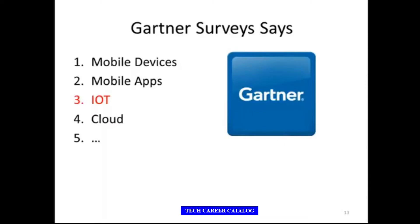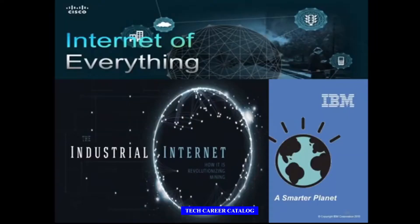According to the Gartner survey, there will be over 26 billion connected IoT devices in the world by 2020. Consumers will not be the only ones using IoT devices — cities and companies are always trying to become more efficient and save both time and money by adopting smart technologies. Looking at the market, Cisco, IBM, and Microsoft have started their own IoT ventures: Cisco started 'Internet of Everything,' IBM started 'Smarter Planet,' and Microsoft started 'Industrial Internet.'